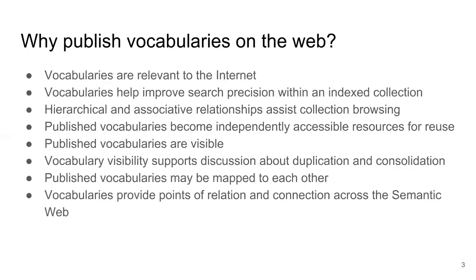Australian examples of research organisations which use vocabularies include the Commonwealth Scientific and Industry Research Organisation, or CSIRO, the Bureau of Meteorology, the Integrated Marine Observing System, and Geoscience Australia. Many vocabularies are developed to support the needs of a particular organisation, systems, or a network of systems within a particular domain, such as a library network. However, the purposes for which these vocabularies were developed remain relevant within the context of the internet.